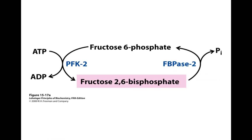The question always becomes: how is F2,6-BP actually made? What's interesting is that we're going to utilize two isozymes here. Isozymes are enzymes that function on the same substrate but have different products. PFK1 is the one we actually use in glycolysis, and FBPase1 is what we use in gluconeogenesis. But to make this allosteric regulator — fructose 2,6-bisphosphate — we're going to use two different enzymes called PFK2 and FBPase2. These particular isozymes catalyze the reaction that converts fructose-6-phosphate into this important allosteric regulator.